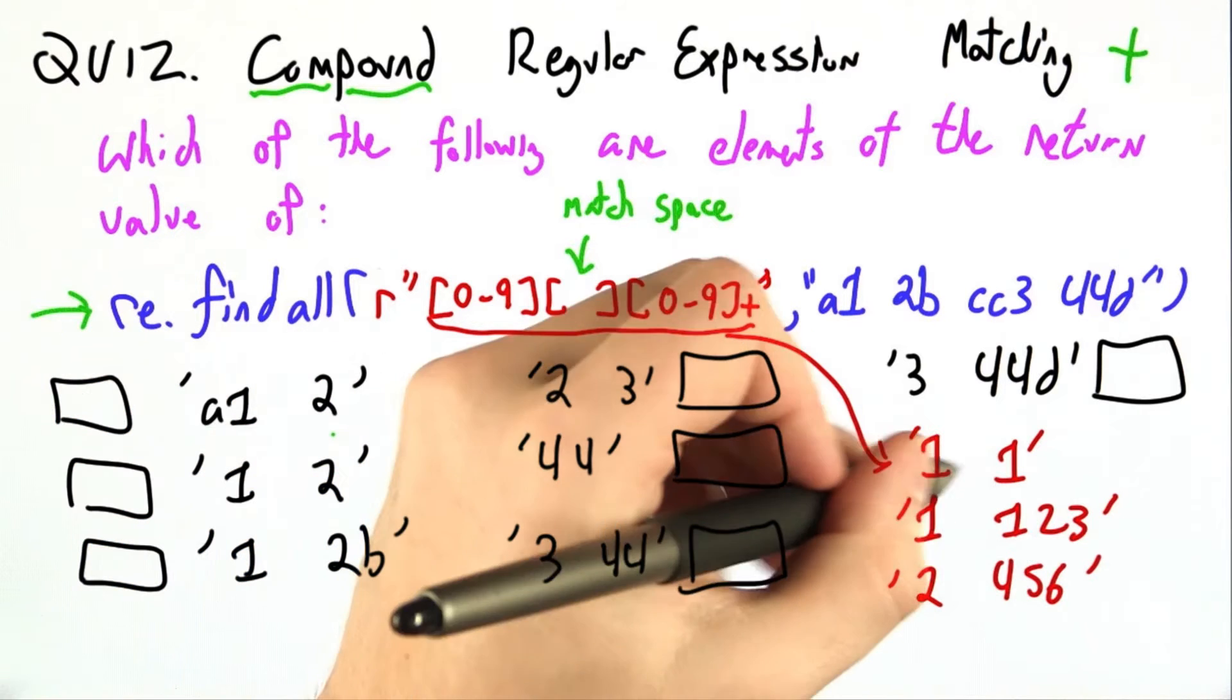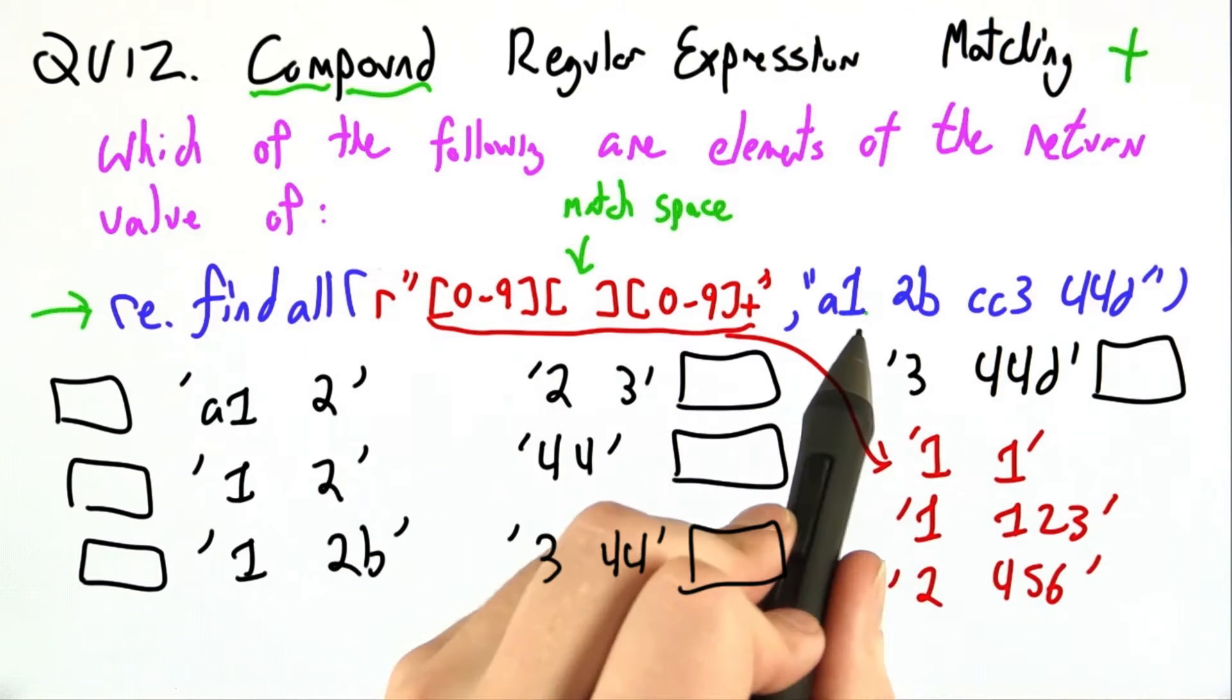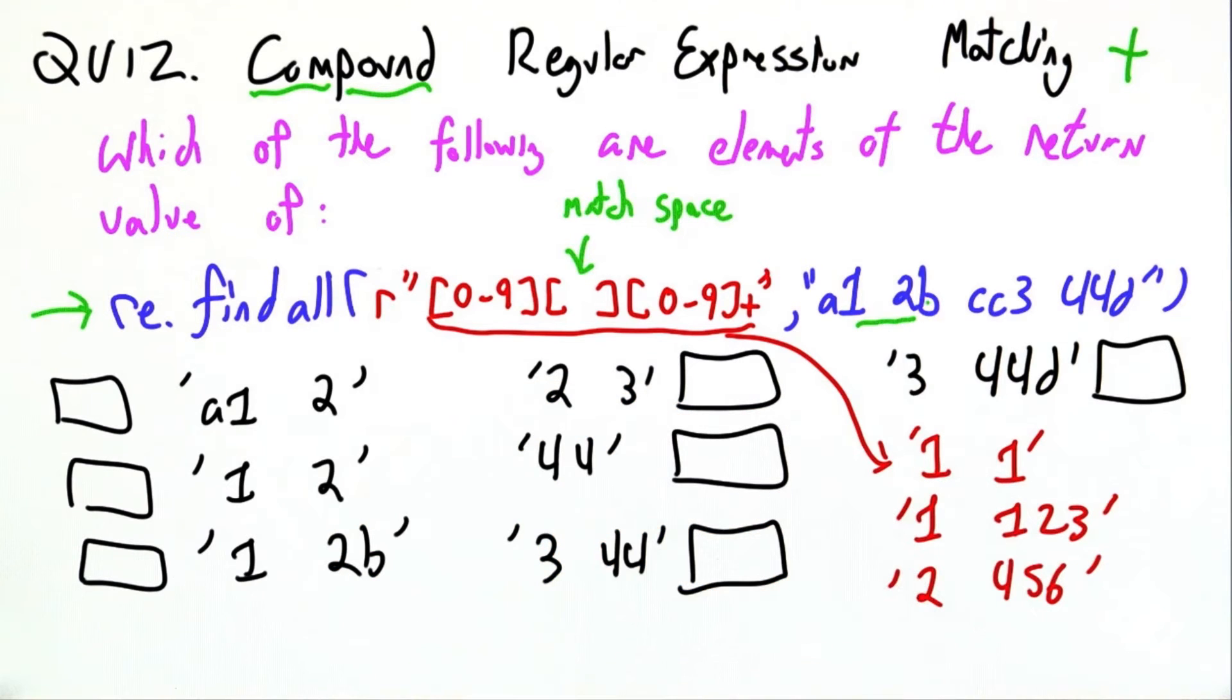How about 1 space 2? Oh, that looks pretty good. We have 1 space 1, and we could pick a different digit. And it's in the string, so it could be part of our return value.